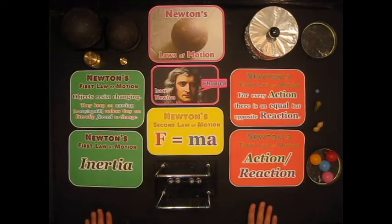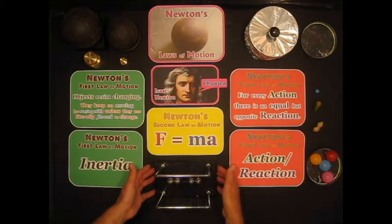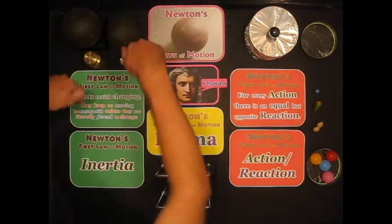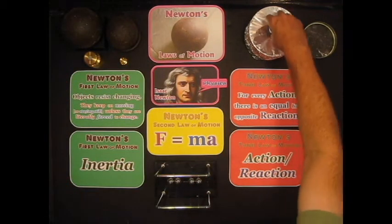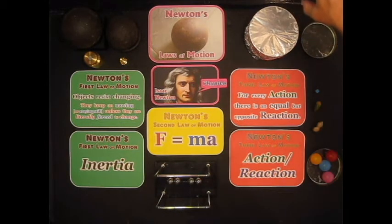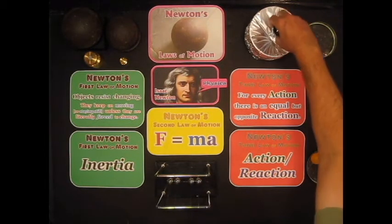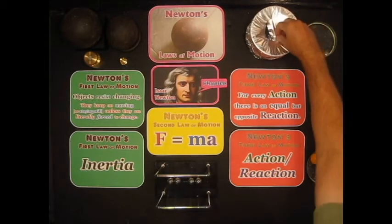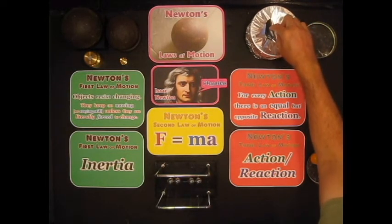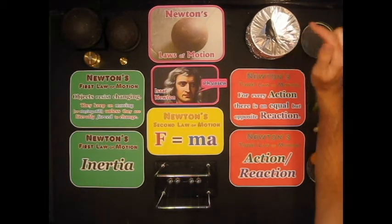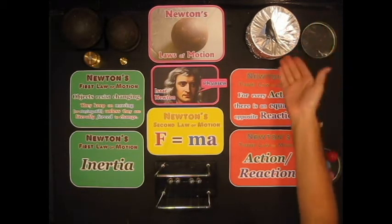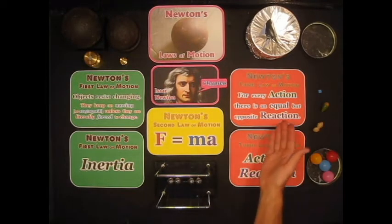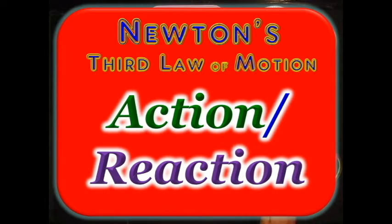So this surface is obviously exerting normal force upon all of these things, because they're not falling through. The only time when the normal force fails us is if an object breaks through it, well, then it wasn't able to supply enough normal force to stop the force of gravity. So a quicker way of saying Newton's third law is action-reaction.